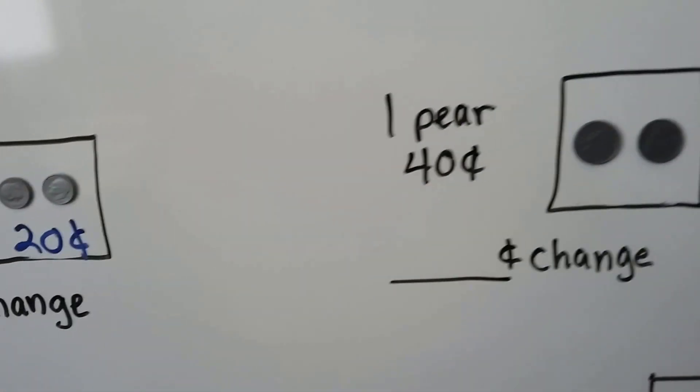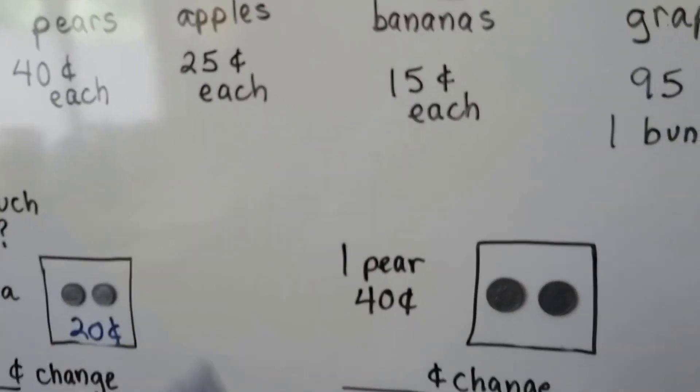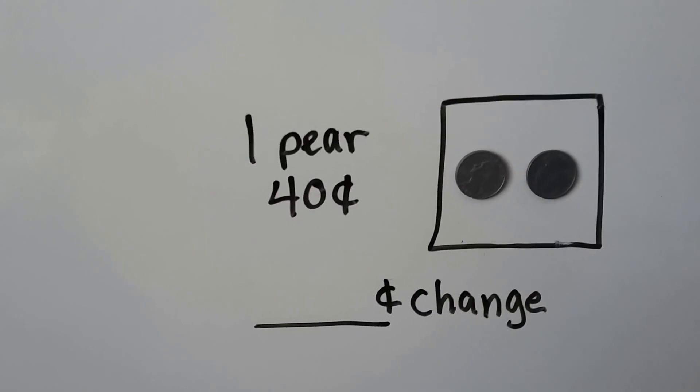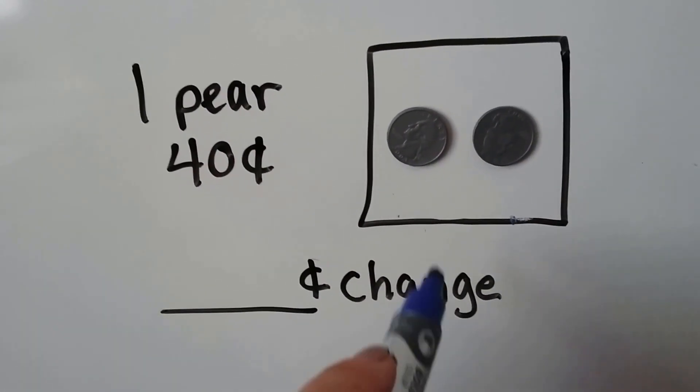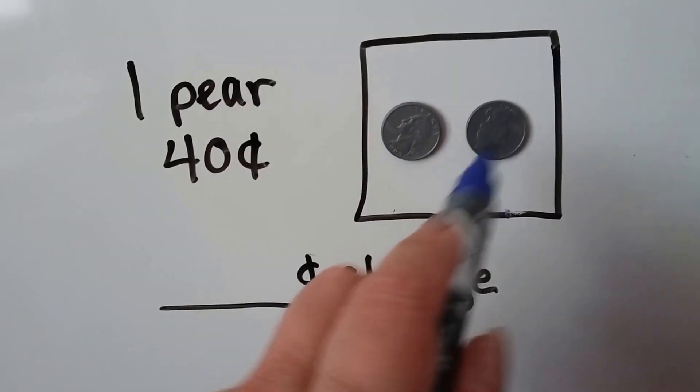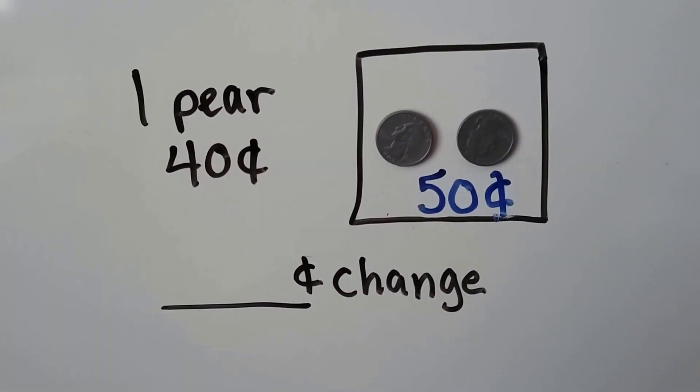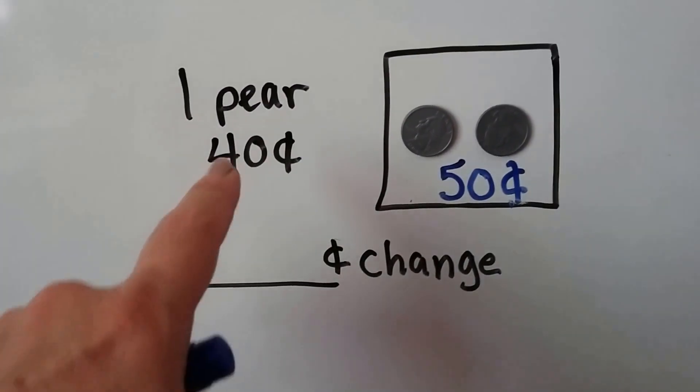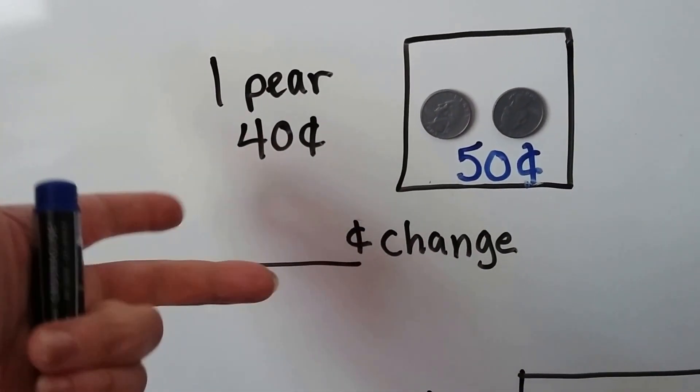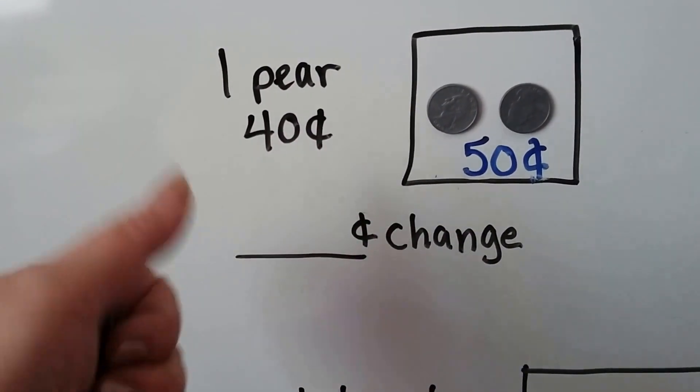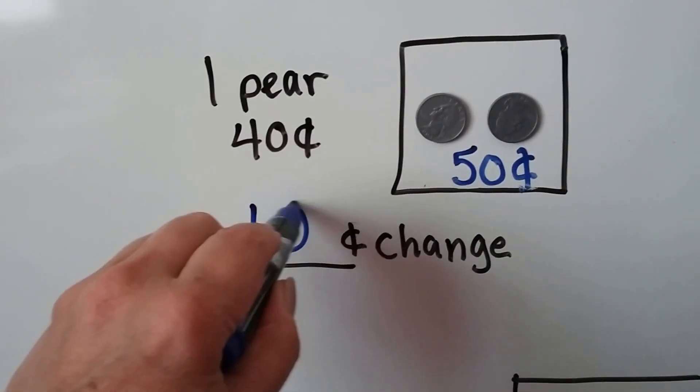Let's try this one. We want to buy one pear and they're 40 cents each, and we give the cashier two quarters. Remember what quarters are, counting by 25: 25, 50. So that's 50 cents. How much change should come back? We start with the 40 and count up to 50: 41, 42, 43, 44, 45, 46, 47, 48, 49, 50. That's 10 cents change.